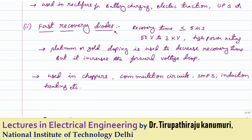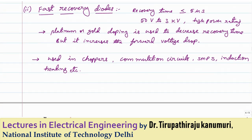The next type is the fast recovery diode, where the reverse recovery time is less than 5 microseconds. To achieve this, doping is done using platinum or gold instead of normal doping methods, which increases the cost drastically. This also increases the forward voltage drop. The voltage rating varies from 50 V to 3 kV. These diodes are used in choppers, commutation circuits, SMPS, and induction heating — wherever high-frequency switching operations are required.